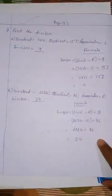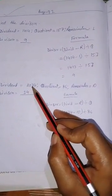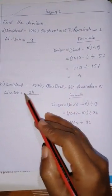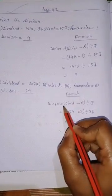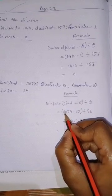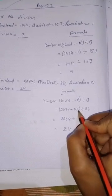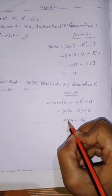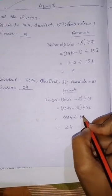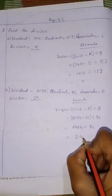Next: dividend is 2774, quotient is 86, remainder is 10, and divisor is unknown. Using the formula: divisor equals (dividend minus remainder) divided by quotient. So: 2774 minus 10 equals 2764, divided by 86. The answer is 24. You can do the rough work in your copy and then calculate.